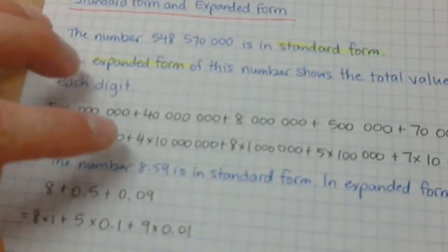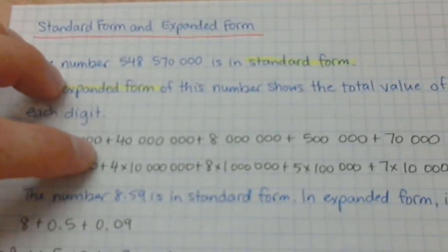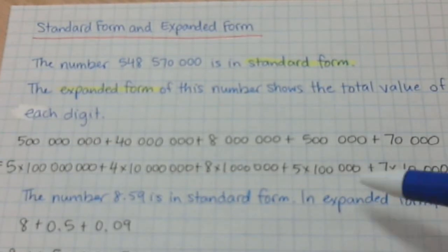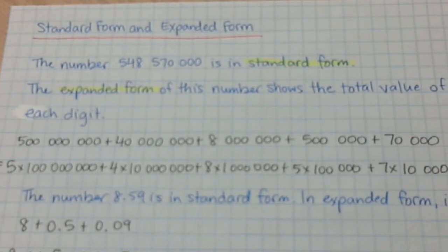Now, the last thing we're going to talk about is standard and expanded form. That number 548,570,000 is in standard form. So if I ask you to write your answer in standard form, that's what I'm looking for. Just write the number, whether it be something that big, or whether it be like 10, or 15, or 11, or 121.